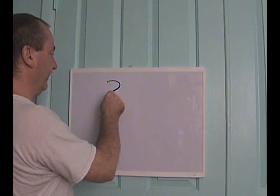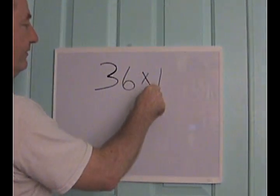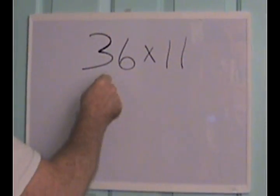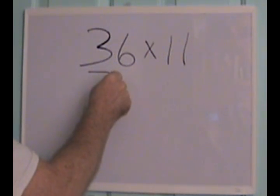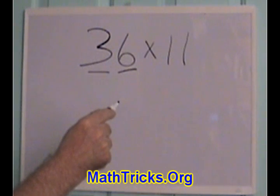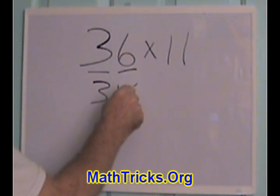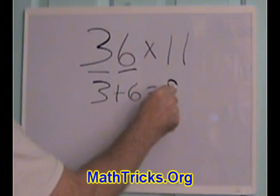Let's take 36. Now, the method is very easy. What you need to do is take the two digits of the number that you're multiplying by 11 and add them. So, in this example here, we have 3 plus 6 equals 9.